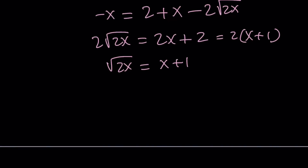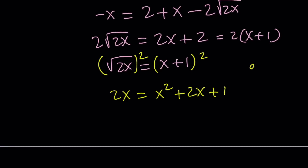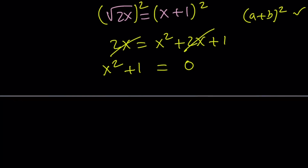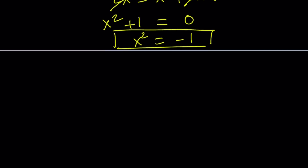Now let's square both sides one more time. Squaring both sides might introduce extraneous solutions, something we have to check at the end. We get 2x equals x squared plus 2x plus 1, using the formula for (a + b) squared. The 2x terms cancel out, and we end up with x squared plus 1 equals 0. No real number squared plus 1 can equal 0, so we need complex numbers. The solutions are x equals i and x equals negative i, since i is defined as the number whose square equals negative 1. That is the end of the first method.